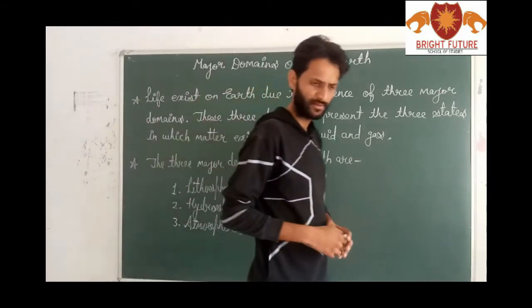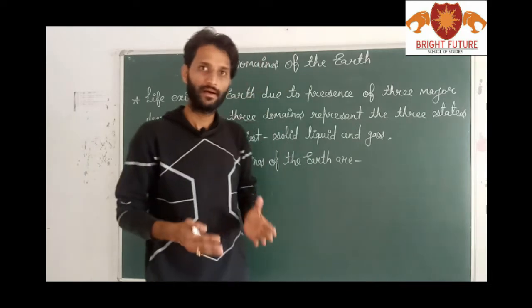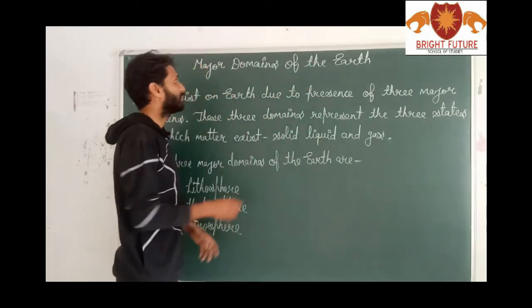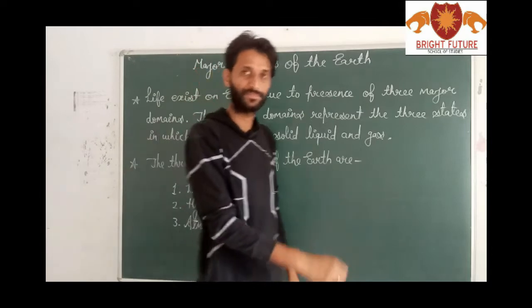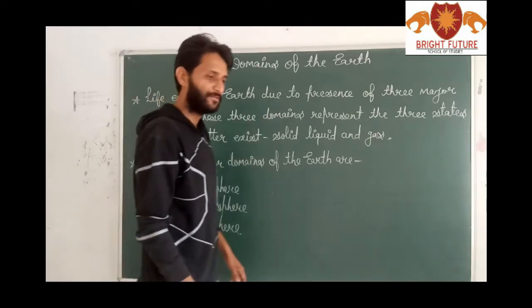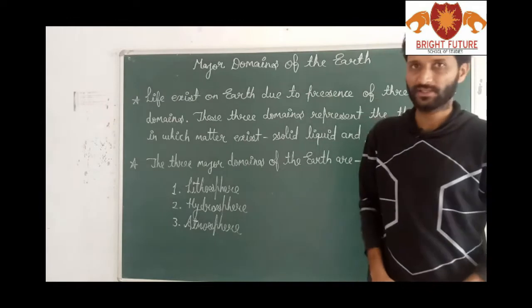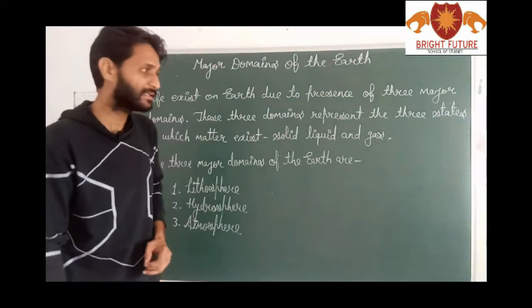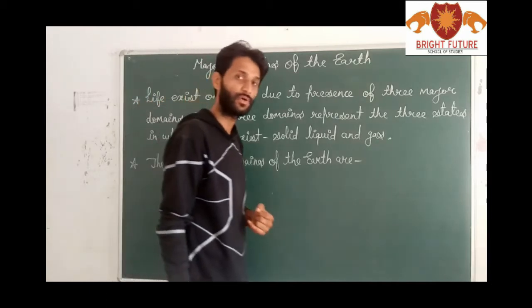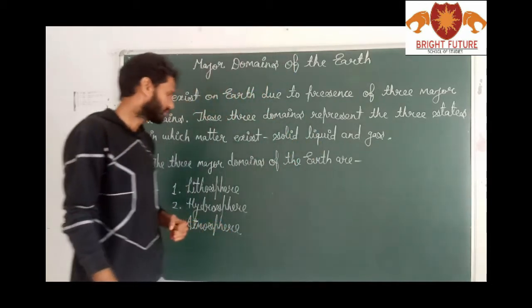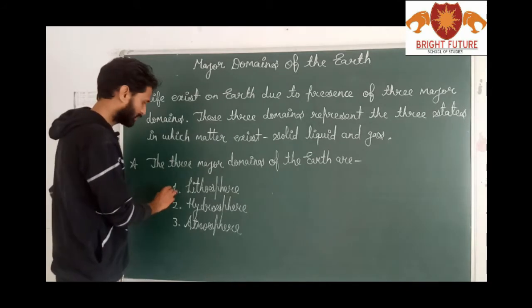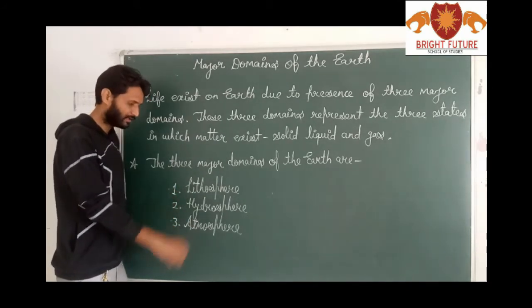A question may arise in your mind: why does earth have life? It is because of three major domains of the earth. Life exists on earth because of these three major domains, and these three domains represent the three states in which matter exists on earth — solid, liquid, and gas. The three major domains are: first, lithosphere; second, hydrosphere; and third, atmosphere.